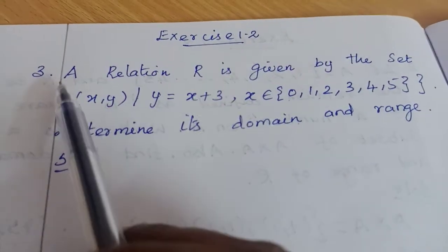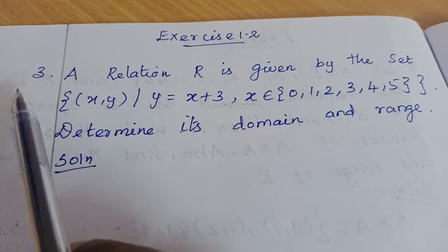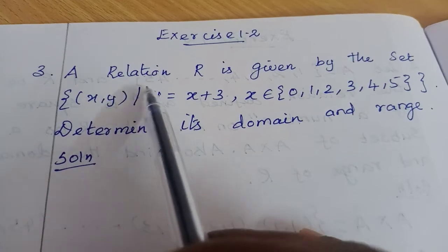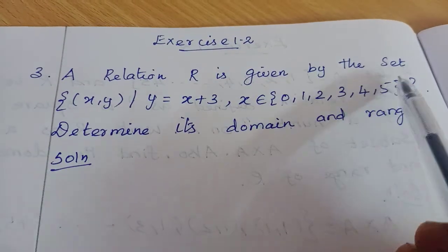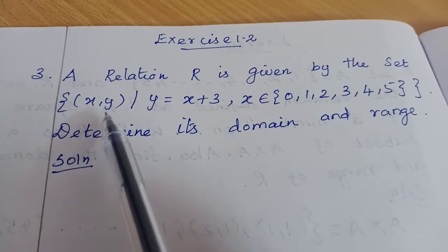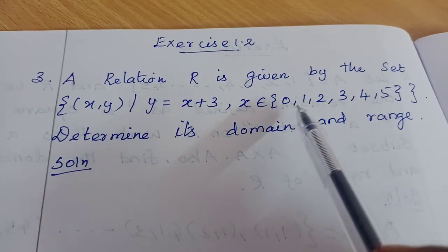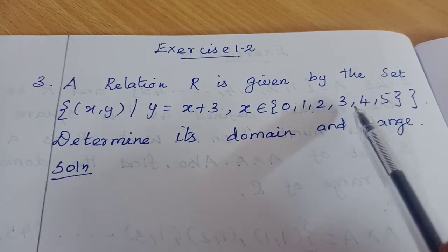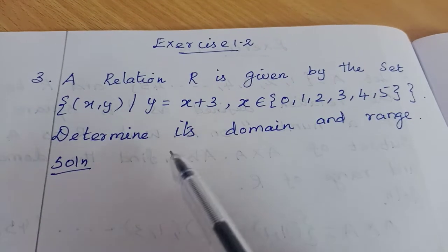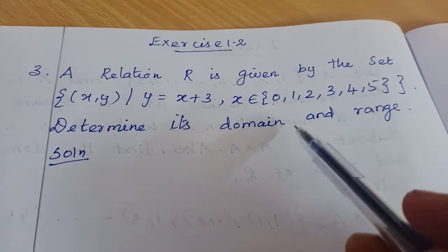Hello students, welcome to max class. In this video, exercise 1.2 third problem: A relation R is given by the set {(x,y) | y = x+3, x ∈ {0,1,2,3,4,5}}. Determine its domain and range.